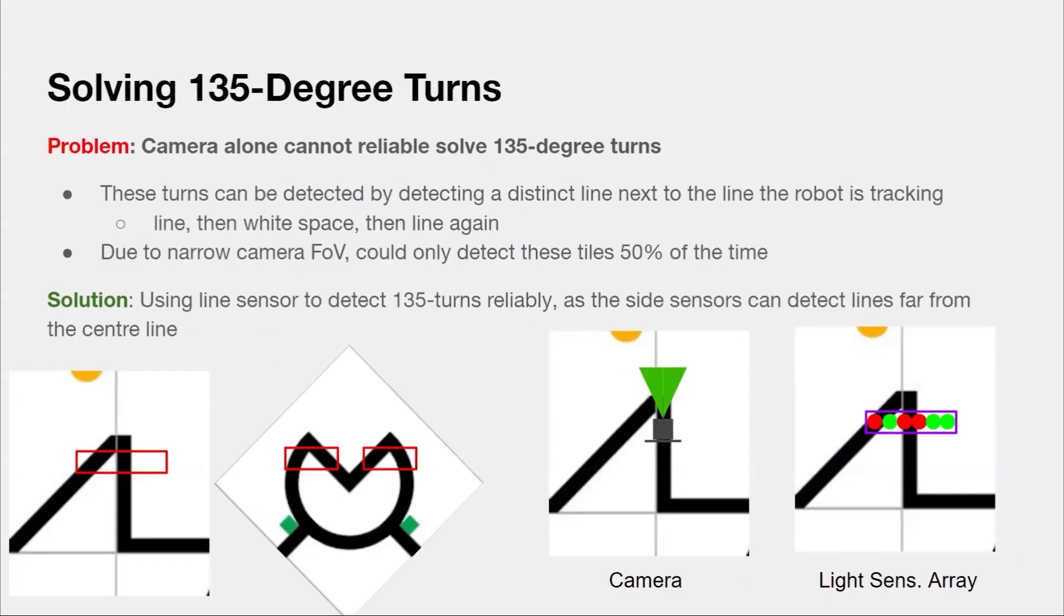Previously, when we were using the camera to line track, the robot could not reliably execute 135-degree turns. When the turn is far away, the robot ignores the distinct line next to the line it's tracking, as it prioritizes line elements closer to it. But when the turn is close, due to the camera's narrow field of view, it cannot detect the pattern of a 135 turn. For ARCAD, we use a light sensor array to solve this problem. As it has a higher field of view, it can detect the pattern even when close to the turn and react accordingly.